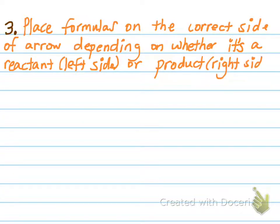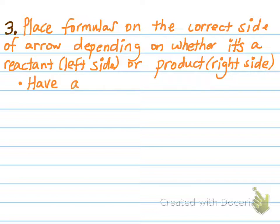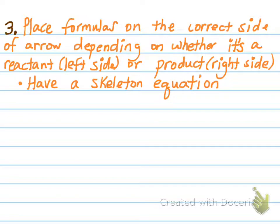Place the formulas on the correct side of the arrow depending on whether it's a reactant or a product. This is important because sometimes your textbook is going to try to fool you — they'll say something like 'aluminum chloride is formed from its elements,' which means aluminum chloride is actually the product. At this point, you have a skeleton equation, which is an unbalanced chemical equation. Everything's in symbols and you have your skeleton equation.